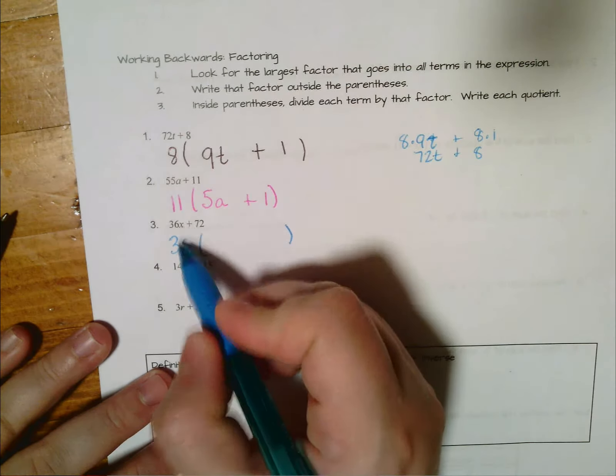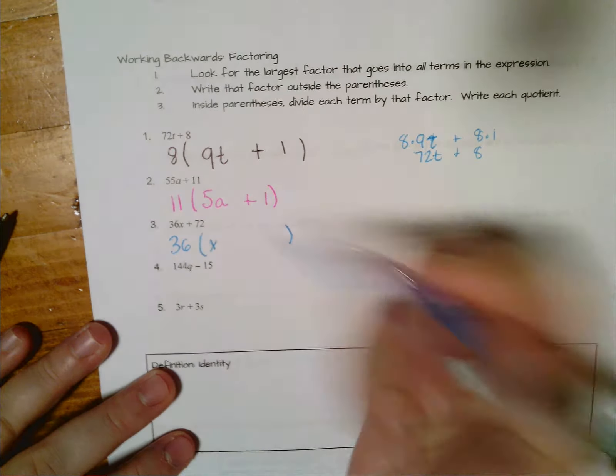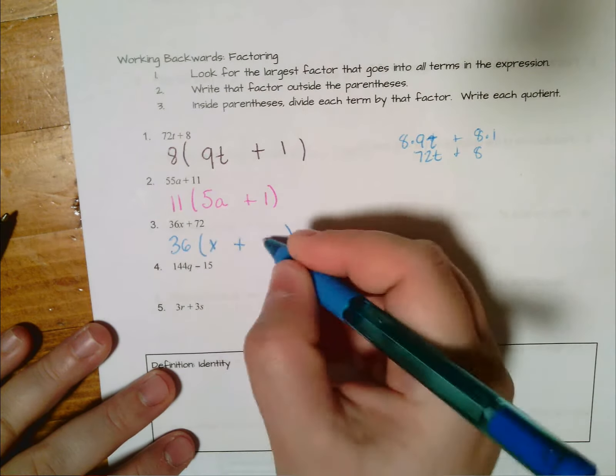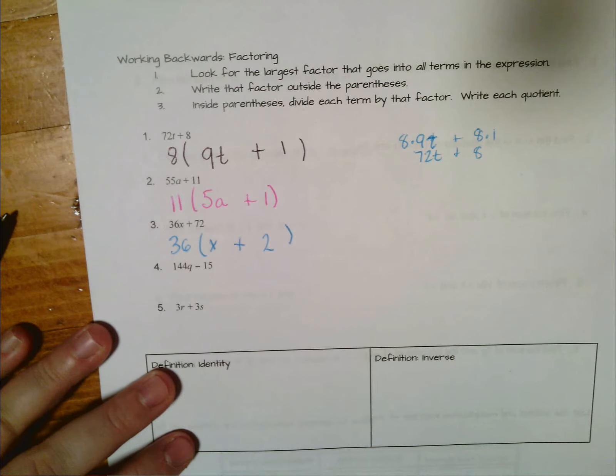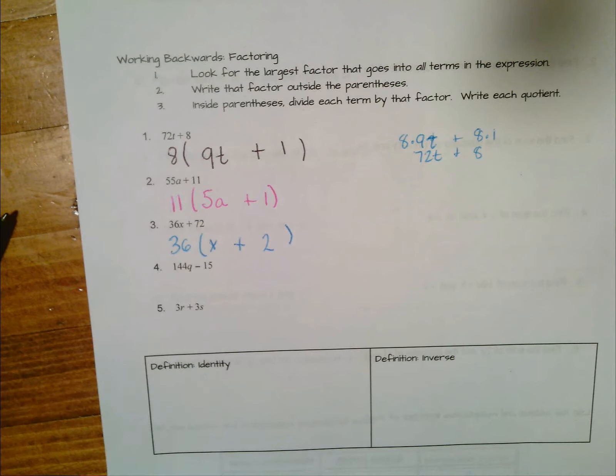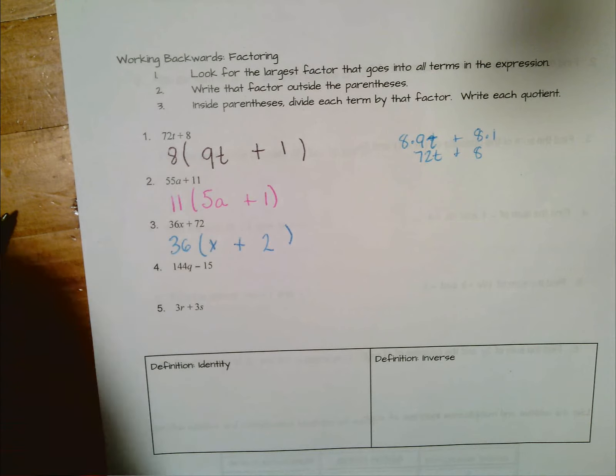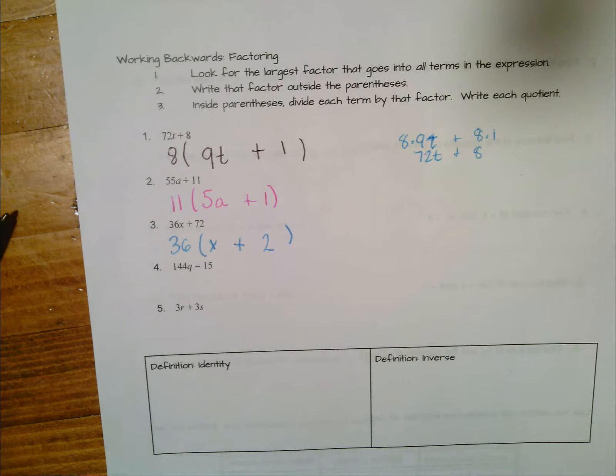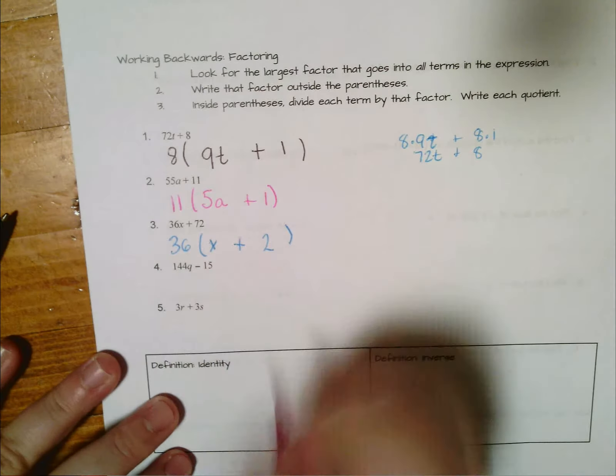So 36 times x will give us 36x plus 36 times 2 gives us 72. If you're ever not sure if your answer is correct, you can check it by using the distributive property.